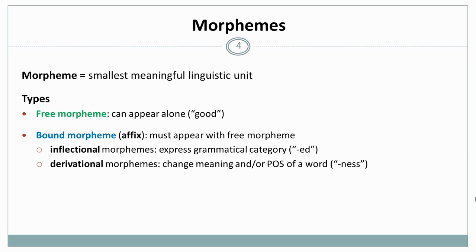Bound morphemes, on the other hand, have to appear together with some free morpheme, and these are called affixes. In English, you typically have prefixes and suffixes. And bound morphemes are subcategorized into inflectional morphemes and derivational morphemes.